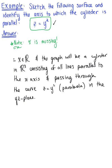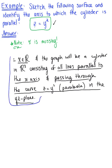So since x is missing, we know it takes on the values of all real numbers, and the graph is going to be a cylinder in R³ consisting of all the lines parallel to the x-axis and passing through the curve z equals y squared in the yz plane. We already know a great deal about this surface without even sketching it yet, and we'll use this information now to help us.